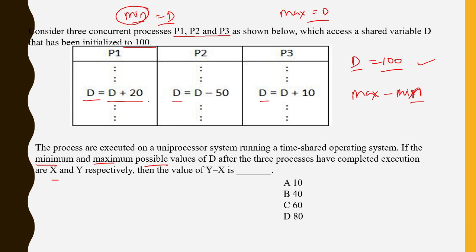So P1 is incrementing the value, P1 is doing plus. P2, P3 is also doing plus, it's also incrementing. Only P2 is decrementing the value, so only when P2 will decrement, that will be the only possible minimum value.